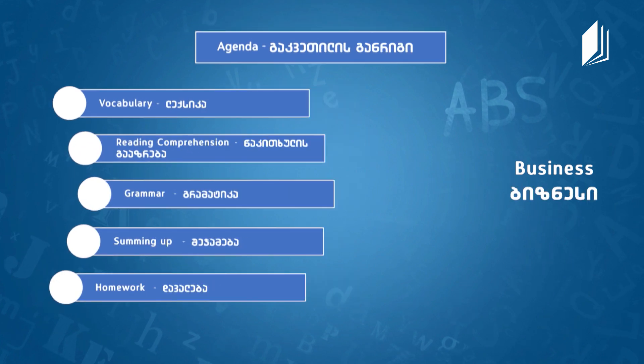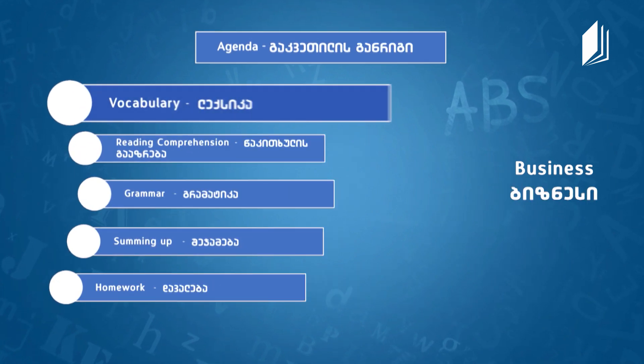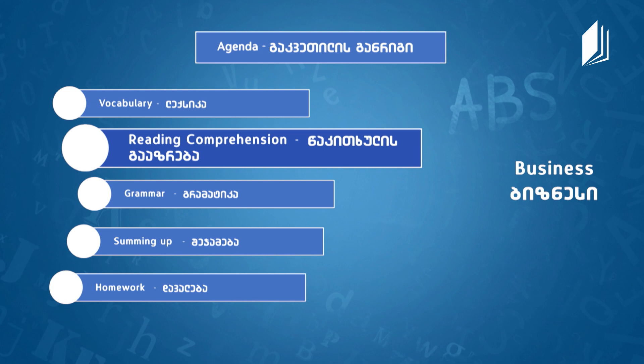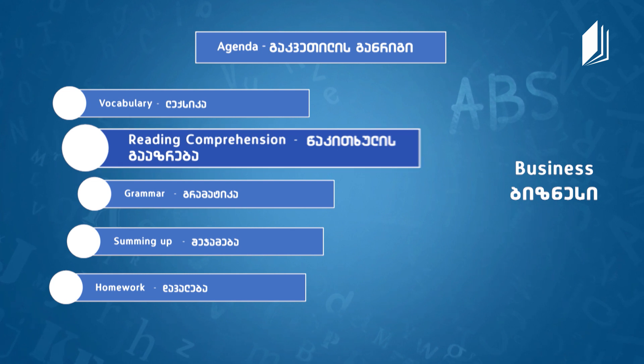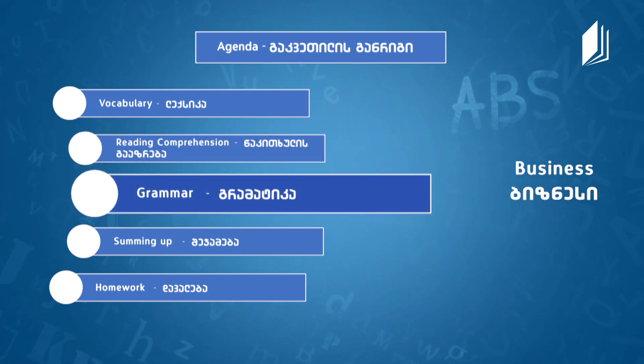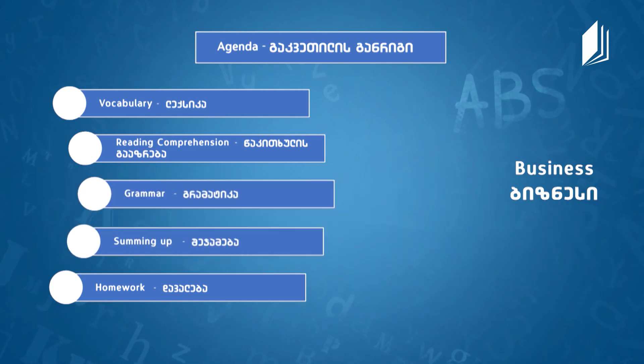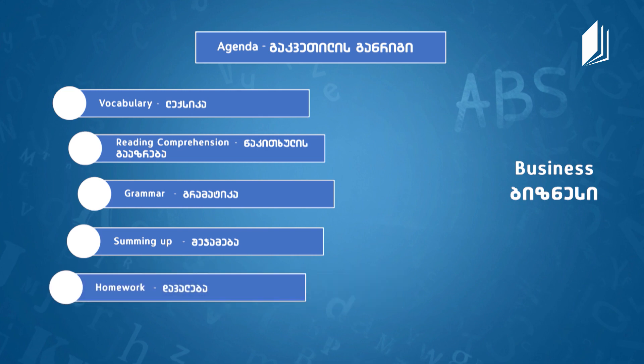Before we move on to the lesson, we have to look at our agenda. We often start off with an introduction where we have a short discussion about topics related to business. Then we'll move on to vocabulary — a list of words you'll need for the world of business and for the reading text. From there we'll go to the reading text, then the grammar section, and finish up with a summary and homework.